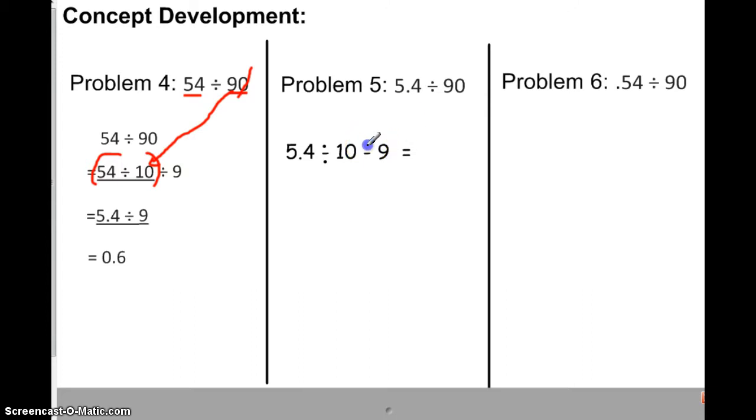Let's try another one. The division thing is gone. So here we have 5 and 4 tenths divided by 90. We're dividing by 10 immediately. So the 90 becomes the 9. And then this is left. Because we have to divide both numbers by 10. So if we're getting rid of the 0, dividing that by 10, now we have to divide this number by 10. So 5 and 4 tenths divided by 10 would be 54 hundredths divided by 9, which would be 6 hundredths. You following that?